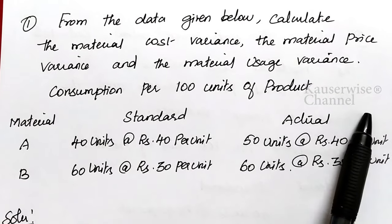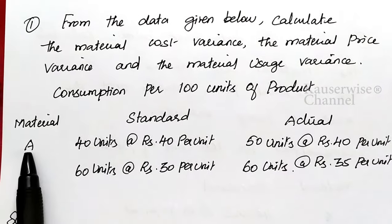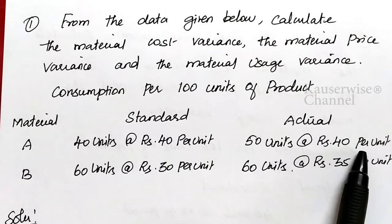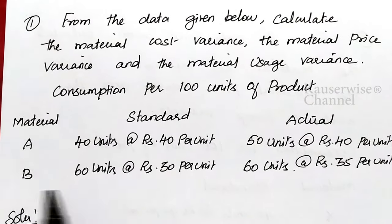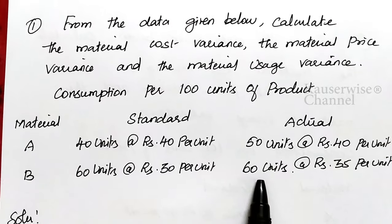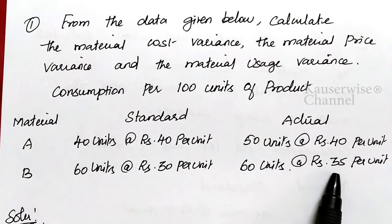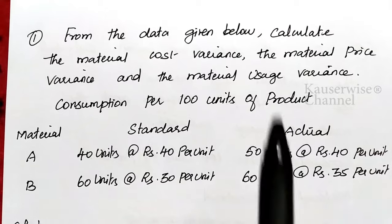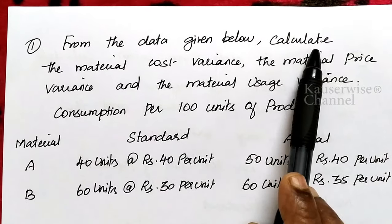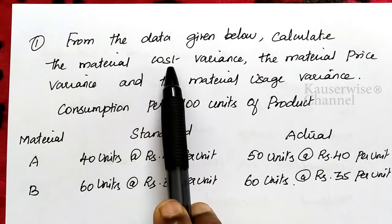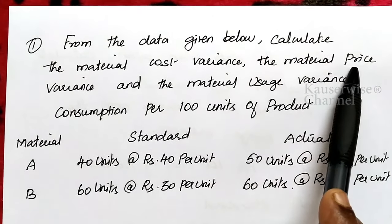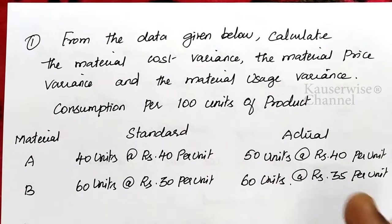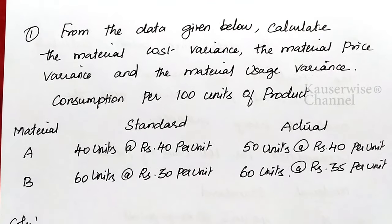Now let us see the solution. We need to enter the standard amount and actual amount for materials A and B. For material A, standard: 40 units at ₹40 per unit — amount = ₹1,600. For material B, standard: 60 units at ₹30 per unit — amount = ₹1,800. Total standard amount = ₹3,400 for 100 units.